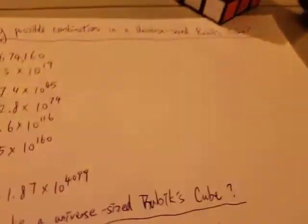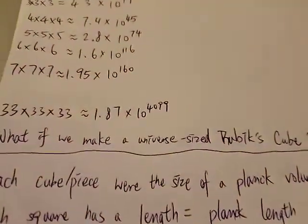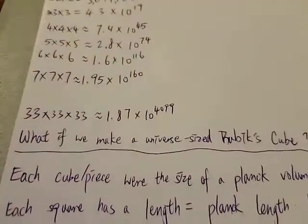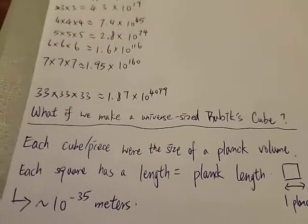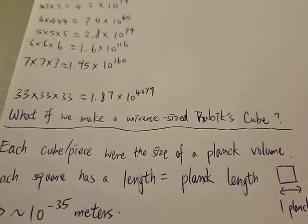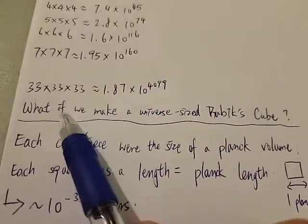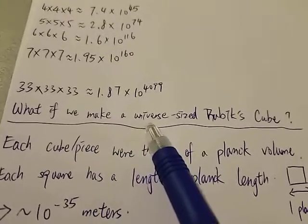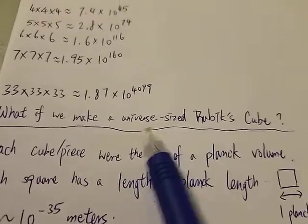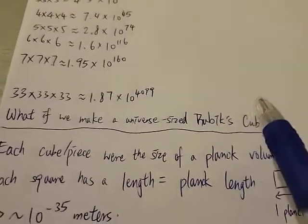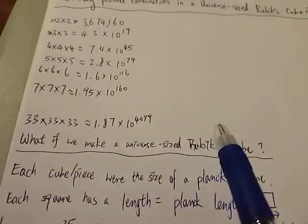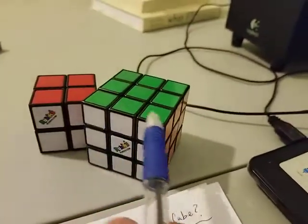And now, what is the largest Rubik's Cube we can ever make? At least physically. The biggest Rubik's Cube we can ever make, of course, is the size of the observable universe. So how many sides does it have for such a Rubik's Cube?